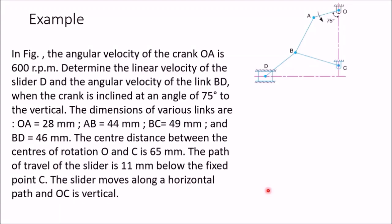In this video, we will solve one more problem using the instantaneous center method. The same problem we have already solved using the relative velocity method. In this problem, a configuration diagram with various dimensions are given. Here OA is rotating in anticlockwise direction with 600 RPM, and we have to determine velocity of the slider D and the angular velocity of link BD using the instantaneous center method.